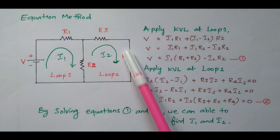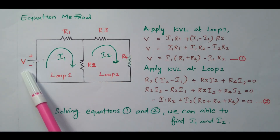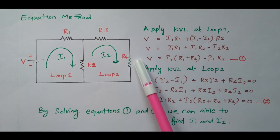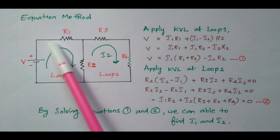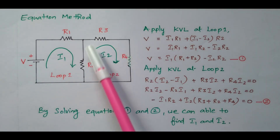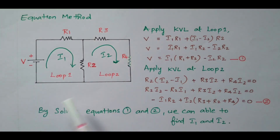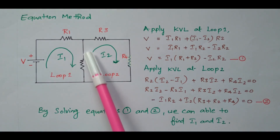Now consider this network. There are two closed paths available. The supply voltage is V, and there are four resistors: R1, R2, R3, and R4. The first closed loop has current flowing through R1 and R2, called loop 1, with current I1. The second closed path contains R2, R3, and R4, called loop 2, with current I2.